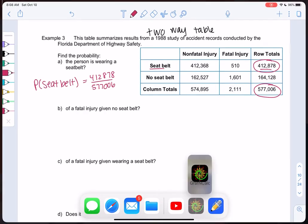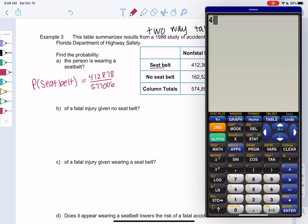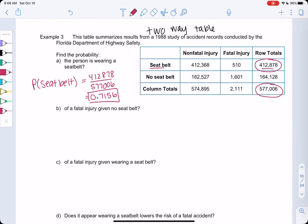We'll go ahead and divide, and we get about 0.7156, so about 71% of people are wearing seatbelts. Now let's see how the givens change these probabilities.